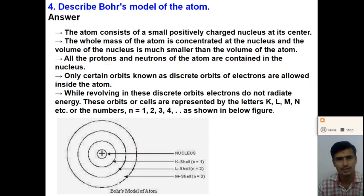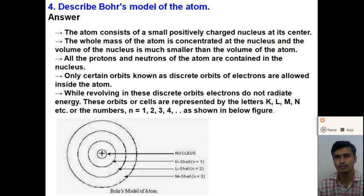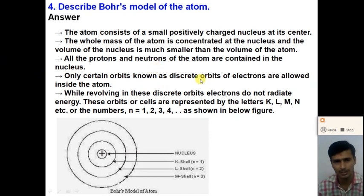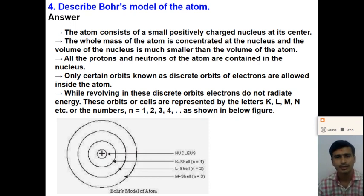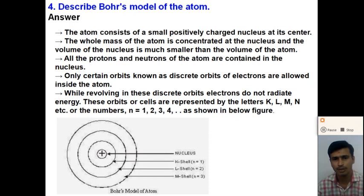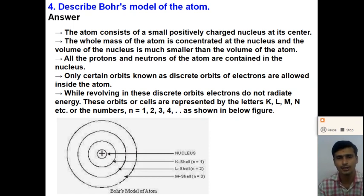The nucleus contains positively charged protons and neutrons. Protons and neutrons are collectively known as nucleons. According to Bohr's model, all the positive charge and mass is concentrated at the very small nucleus, and the electrons revolve around the nucleus in discrete orbits. While electrons revolve in these discrete orbits, they do not radiate energy — that is why these orbits are called stationary orbits.